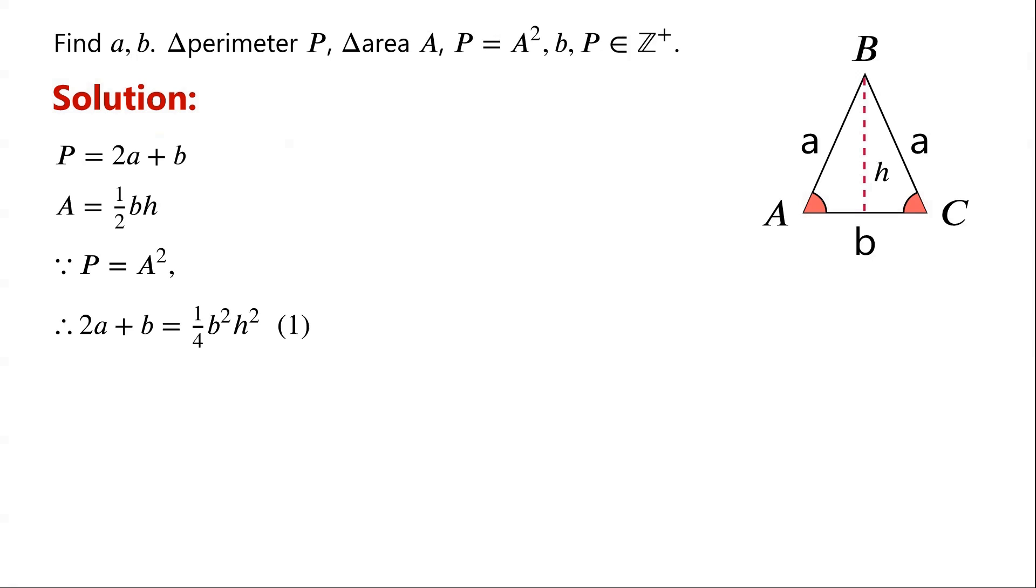By Pythagoras theorem, we know that H squared equals A squared minus a half B all squared. Now substitute H squared in equation 1. We can now write 2A plus B equals a quarter times B squared times A squared minus B squared over 4.